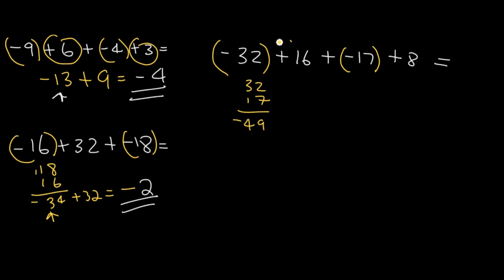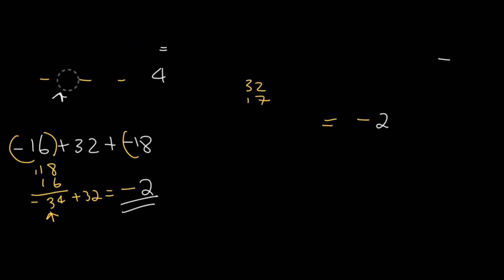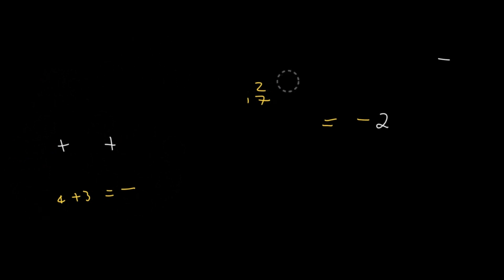Now let's group the positives. 16 plus 8 is 24. Take the sign of the bigger number and subtract. Negative 49 plus 24 equals negative 25. Let's erase these and practice some more problems. By the end of this video, you'll be a master at adding integers.